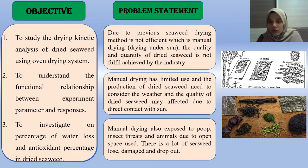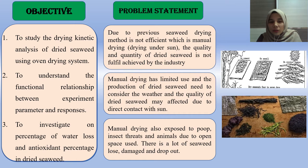The objectives of this project are: first, to study the drying kinetic analysis of dry seaweed using an oven drying system; second, to understand the functional relationship between experiment parameters and responses; and third, to investigate the percentage of water loss and antioxidant percentage in dry seaweed.